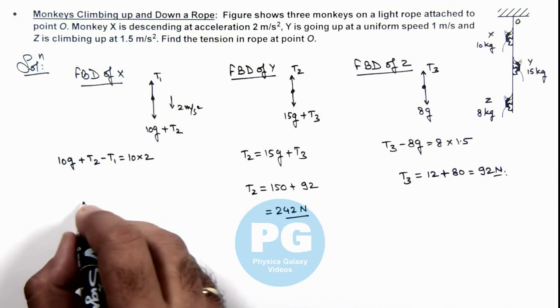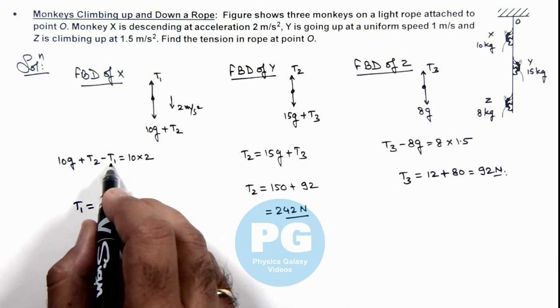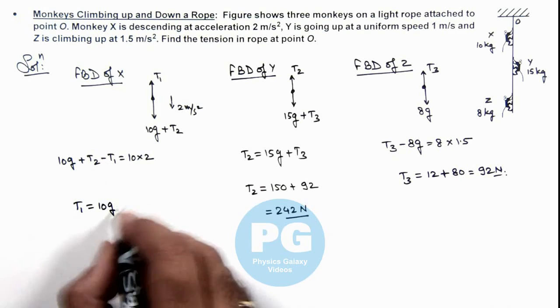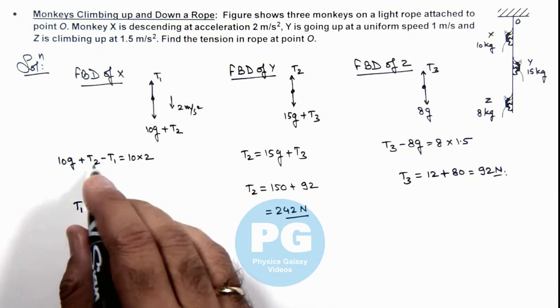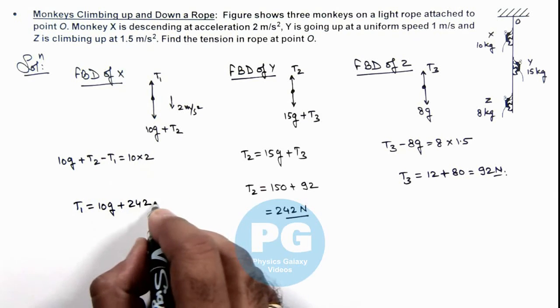we'll directly get the value of T1. And here you can see the value of T1 is 10g plus T2, the value of T2 we already obtained as 242, minus 20.